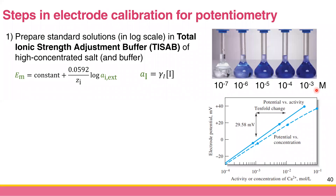One way to prevent this in potentiometry is to prepare standard solutions in something called Total Ionic Strength Adjustment Buffer — TISAB or TISAP. This TISAP is a high-concentration electrolyte or salt that makes the activity coefficient essentially the same in every solution, maintaining linearity. If you don't use TISAP you get the dashed line; if you do use it, the calibration becomes the straight solid line.